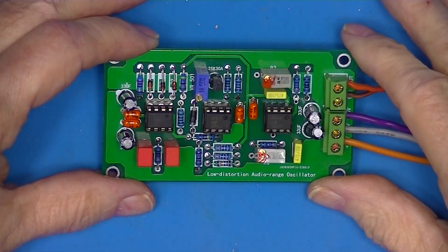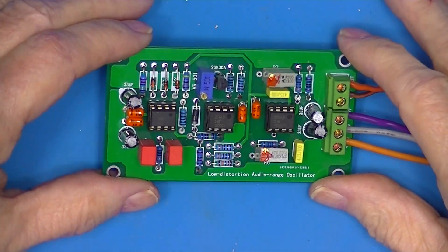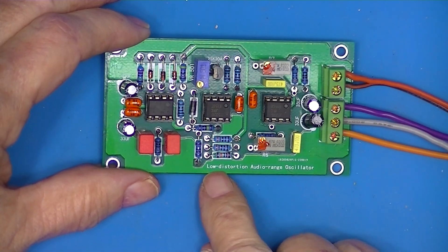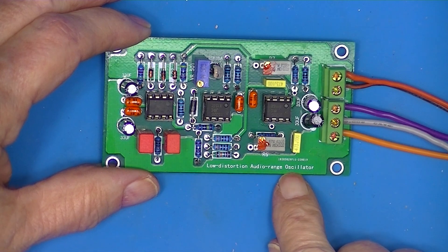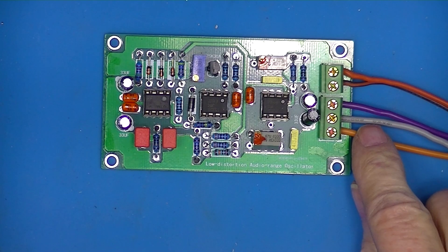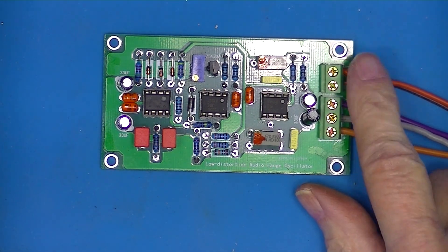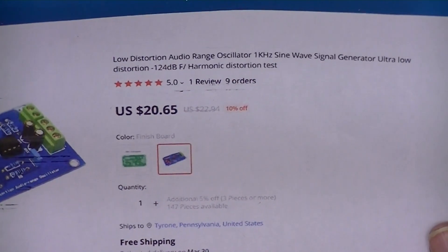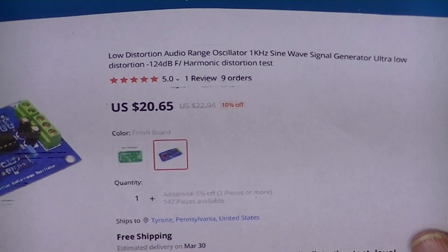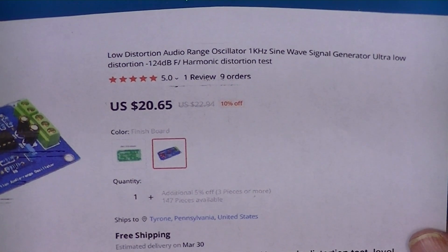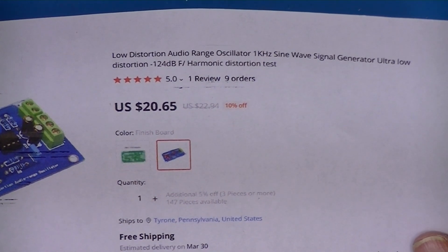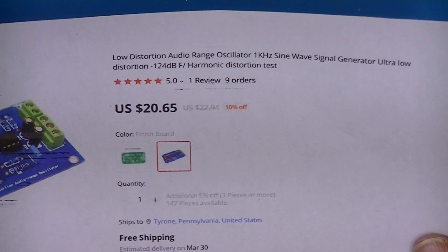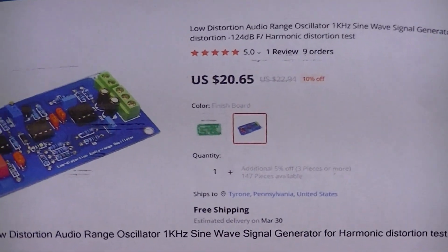I purchased this board for $21 on AliExpress and it purports to be a low distortion audio range oscillator. It's powered with plus and minus 15 volts and has two audio outputs. It's described as a one kilohertz sine wave oscillator with minus 124 dB harmonic distortion.